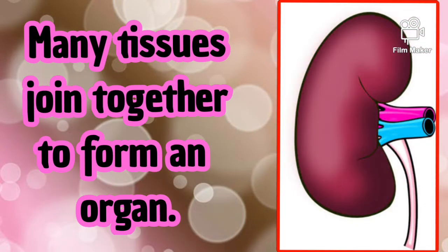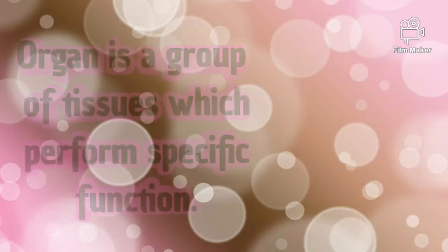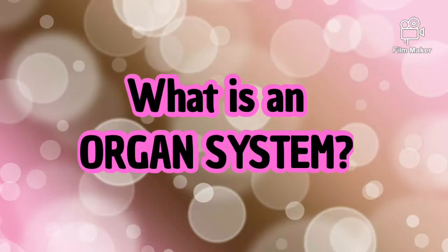Many tissues join together to form an organ. An example of an organ is the kidney. An organ is a group of tissues which perform a specific function.